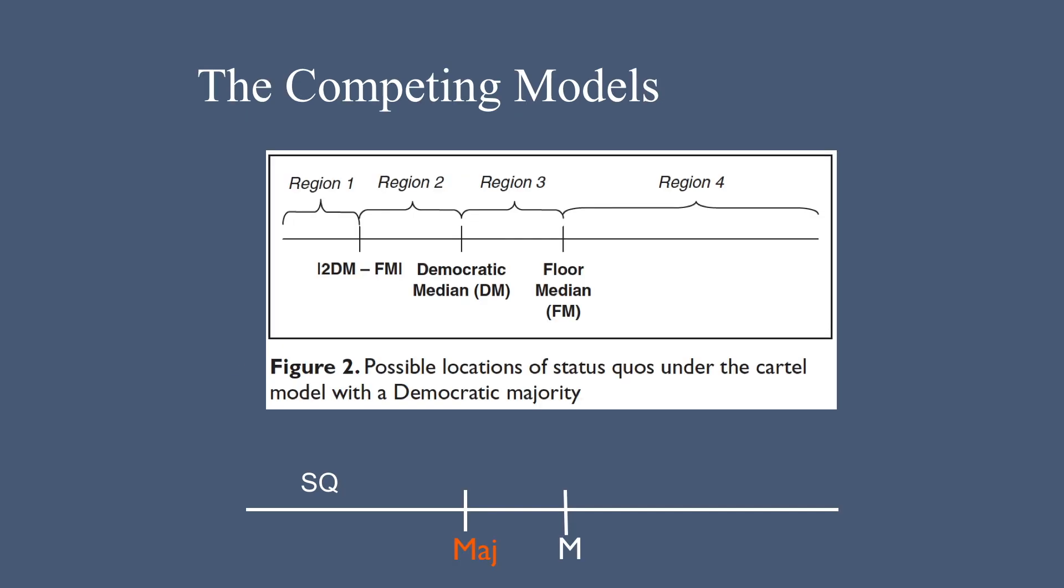In their paper, they provide this figure that divides things into four regions based on where the status quo is. This is the example where the Democratic Party is in the majority. Note that you should think of this as describing what happens in the House where there is no filibuster.